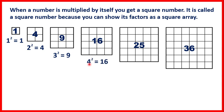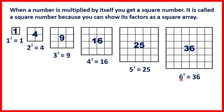Four times four is sixteen, so four squared is sixteen. Five squared is twenty-five because five times five is twenty-five. And six squared is thirty-six because six times six is thirty-six.